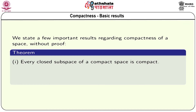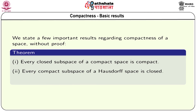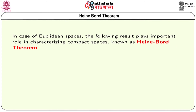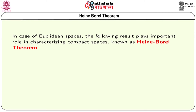We state a few important results regarding compactness. Every closed subspace of a compact space is compact. Every compact subspace of a Hausdorff space is closed. The continuous image of a compact space is compact. And finally, in Euclidean spaces, we have the Heine-Borel theorem: a subset of a Euclidean space is compact if and only if it is closed and bounded.